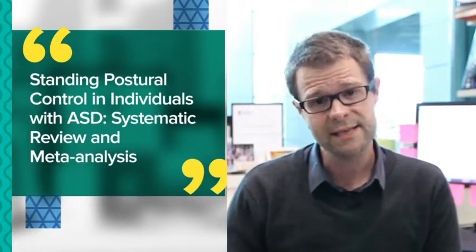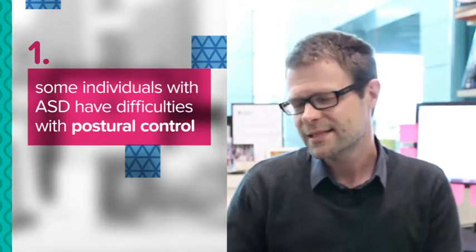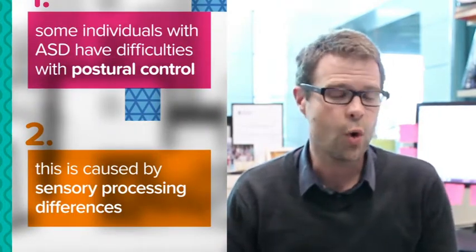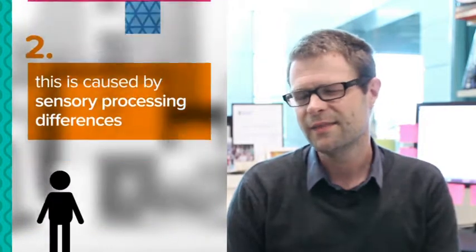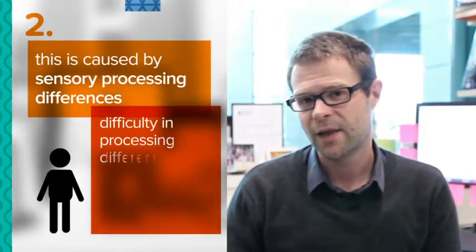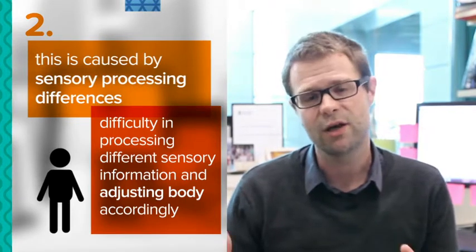What they found was that first, yes, some children and adults on the autism spectrum do have difficulties with postural control, and secondly they found that the difficulties with postural control appear to be caused by sensory processing differences, and in particular, difficulty in integrating information from the different senses and then adjusting the body accordingly.